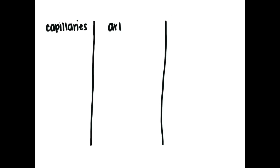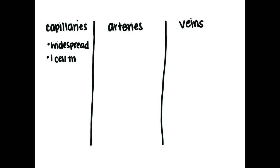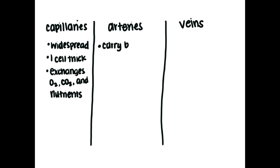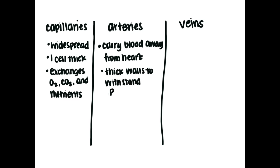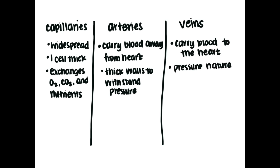In conclusion, the three types of blood vessels are veins, arteries, and capillaries. Capillaries are widespread and one cell thick, and are an area of exchange for oxygen and carbon dioxide as well as nutrients. The arteries carry blood from the heart to the rest of the body and have thick, adjustable walls to help with the pressure changes that need to happen. Finally, the veins are the blood vessels that return blood to the heart with carbon dioxide. The blood pressure is naturally lower because it hasn't been run through the heart recently, so the lumen is much wider and the wall is much thinner than the artery.